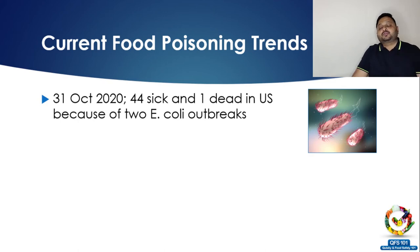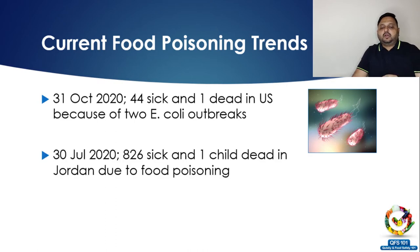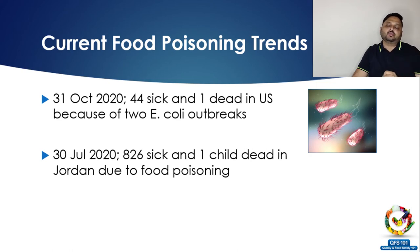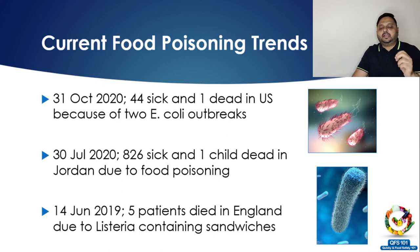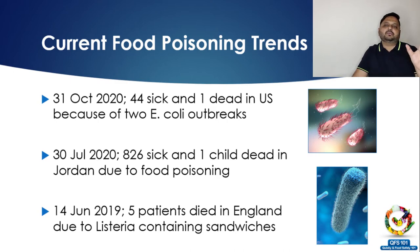To share some recent statistics: on October 31st, 2020, 44 people got sick and one died in two different E. coli outbreaks in the US. On July 30th, 2020, 826 people got sick and one child died in Jordan due to food poisoning. On June 14th, 2019, five patients died in England after eating Listeria-contaminated sandwiches. This disease is not confined to one place — it's all over the world.